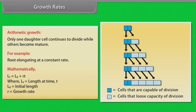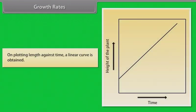Where Lt equals length at time t, L0 equals initial length, R equals growth rate. On plotting length against time, a linear curve is obtained.